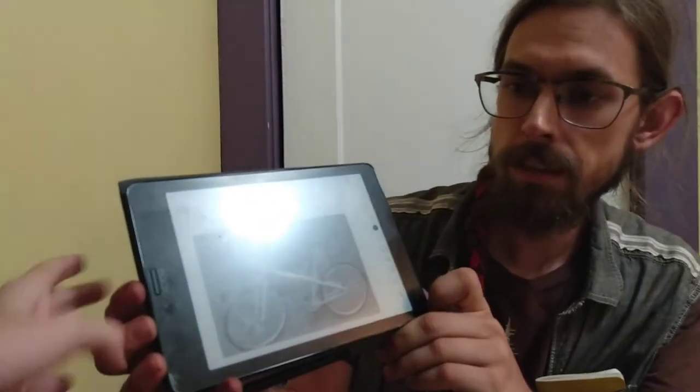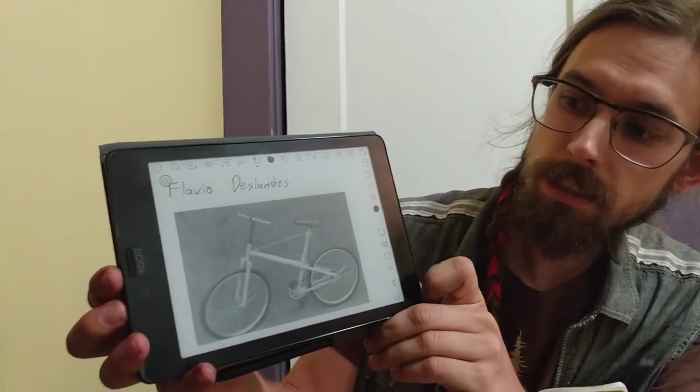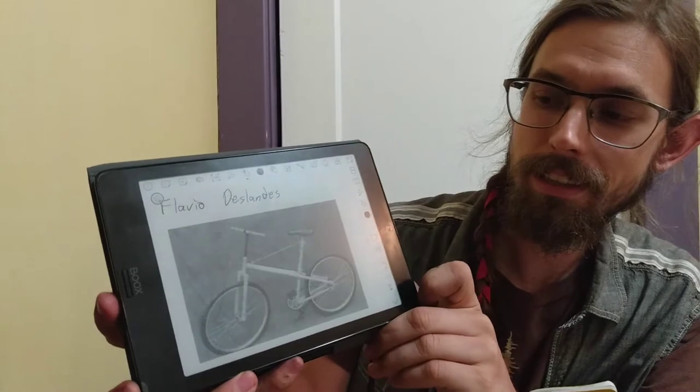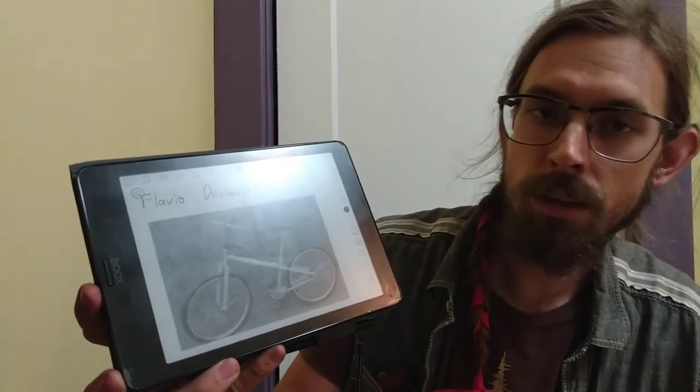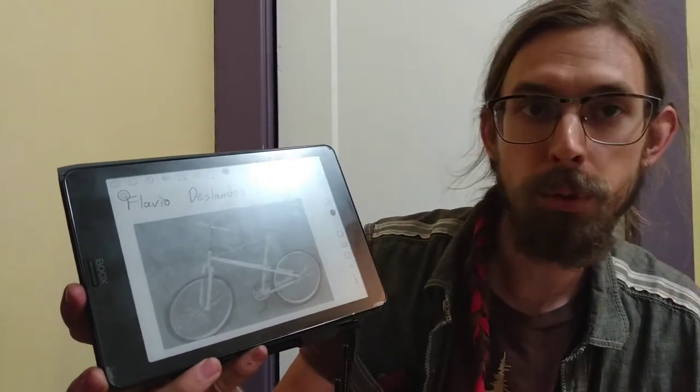And there are actually some bikes that have been built this way. I'm not sure if any of them have really been quite commercially viable, but Brazilian designer Flavio Deslandes created this. It's my favorite, I think, of these because all of the tubing in the frame is bamboo.